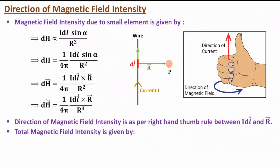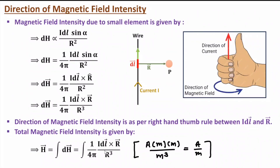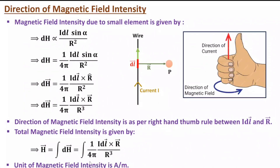This is magnetic field intensity for a small differential element. If you want total magnetic field intensity, that will be the integration of this small differential element, where integration is done with respect to the variable, which can be dl and r. One should also know the unit of magnetic field intensity. Current means ampere, dl means meter, r means meter, divided by meter³. So ampere into meter² by meter³ means the unit is ampere per meter.